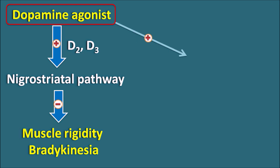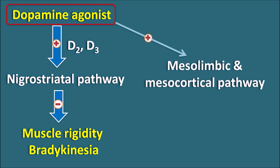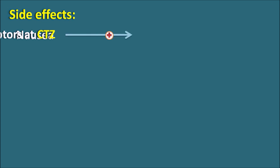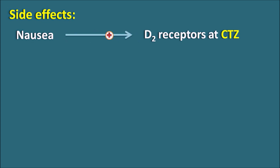However, these drugs can also act on the mesolimbic and mesocortical pathway, which controls behavior. When this pathway is stimulated, it produces psychotic symptoms. That's why these drugs can induce hallucinations in patients due to stimulation of the mesolimbic and mesocortical pathways. Another important side effect is nausea, because dopamine receptor agonists can act on D2 receptors located on the CTZ. When the CTZ is stimulated, they produce nausea and vomiting.